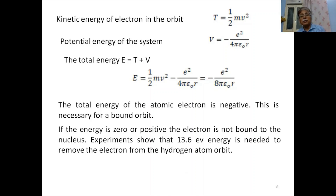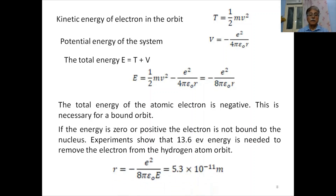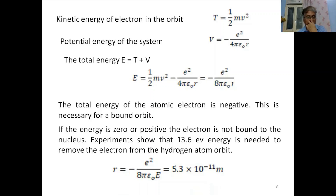Experiments show that 13.6 electron volts of energy is needed to remove the electron from the hydrogen atom. For the ground state with E = 13.6 eV, the radius of the first Bohr orbit comes out to be 5.3 × 10⁻¹¹ meters, that is 0.53 angstroms.